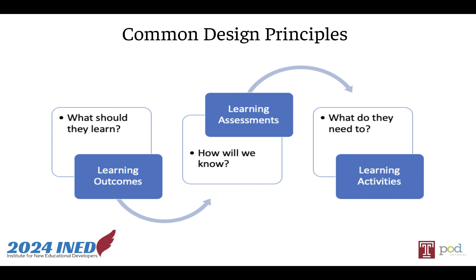Once you've identified your learning outcomes, you next think about the learning assessments — this is where the process feels a little backward to some folks. But this is where we think about how we'll know that students have learned what we want them to learn, and how students themselves will know where they are in that process. Then we think about the activities necessary to help students succeed at those assessments, which means they've achieved the learning outcomes. This very much overlaps with alignment — matching our goals, assessments, and activities so that we're using everyone's time and energy as valuably as possible.